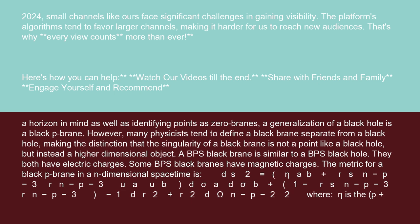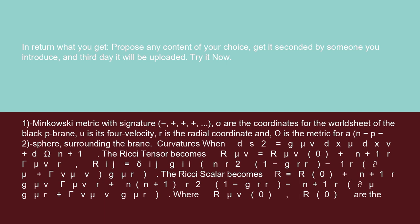The metric for a black p-brane in an n-dimensional spacetime is: ds² = (η_ab + (r_s)^(n−p−3) / r^(n−p−3) · u_a u_b) dσ^a dσ^b + (1 − (r_s)^(n−p−3) / r^(n−p−3))^(−1) dr² + r² dΩ²_(n−p−2), where η is the (p+1)-dimensional Minkowski metric with signature (−,+,+,+,+). σ are the coordinates for the worldsheet of the black p-brane, u is its 4-velocity, r is the radial coordinate, and Ω is the metric for the (n−p−2)-spheres surrounding the brane.